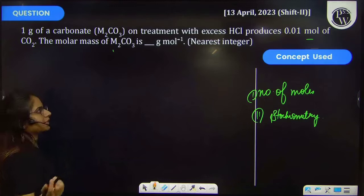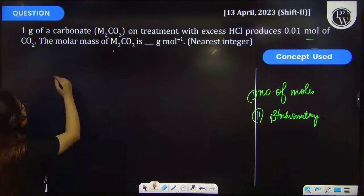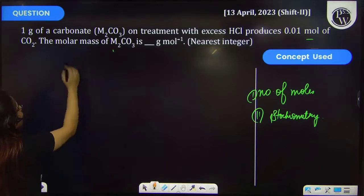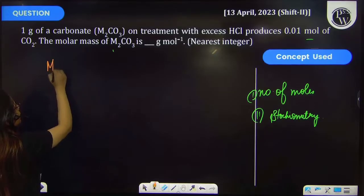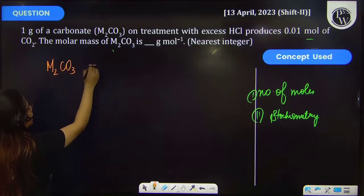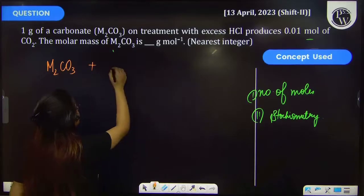So first of all, let's write the equation of this reaction. 1 gram of metal carbonate M₂CO₃ is reacting with hydrochloric acid which is in excess.